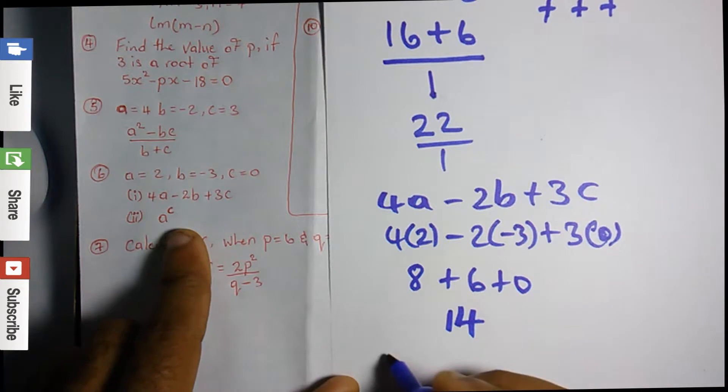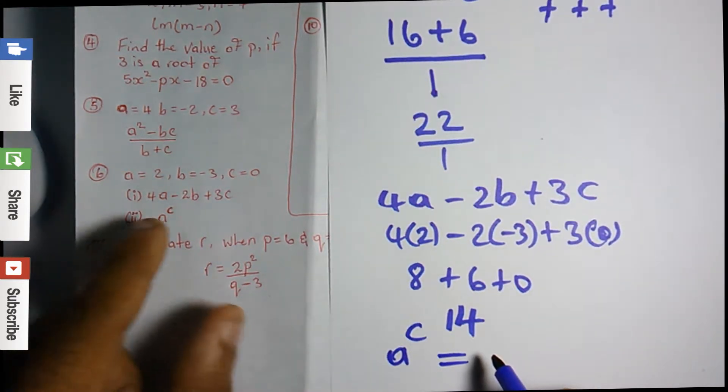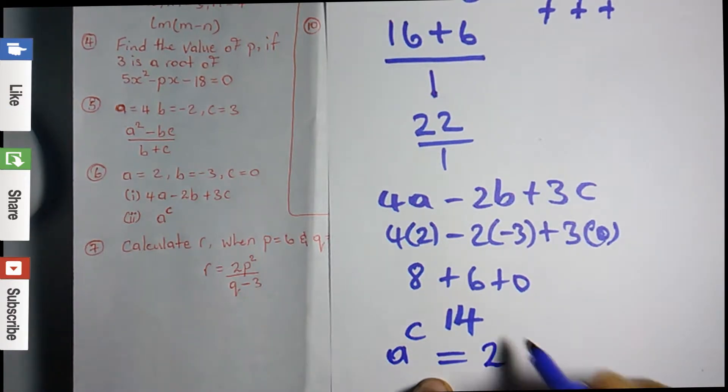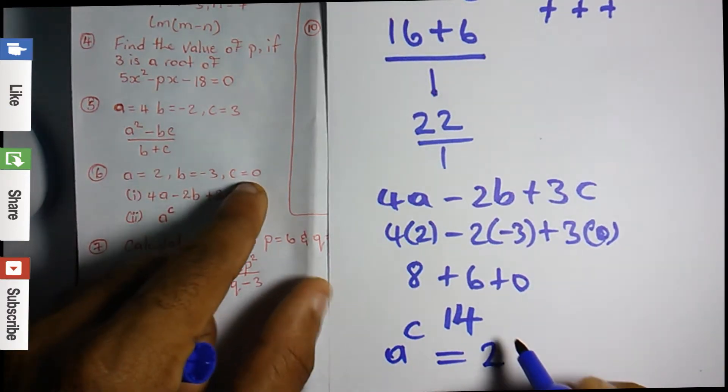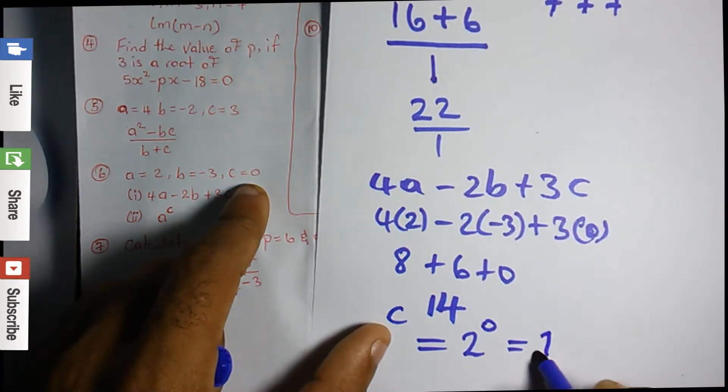So remember a raised to the c power. a is 2 to the c power, c is 0. Remember anything raised to the power 0 is 1.